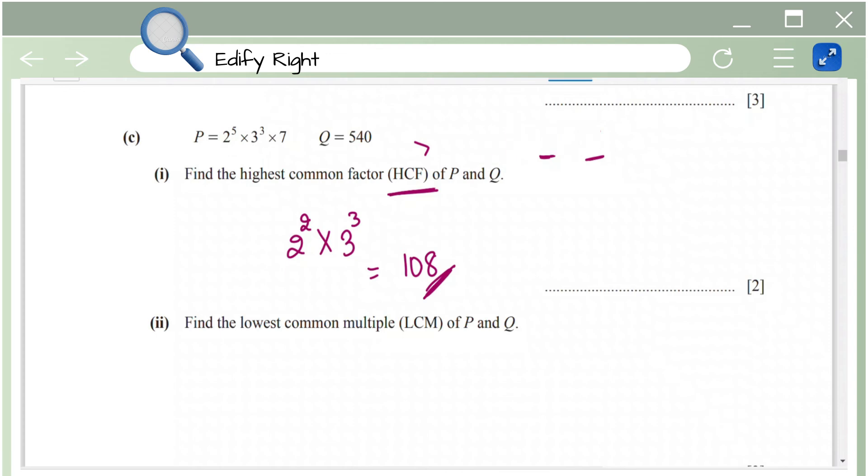Next we have find the lowest common multiple which is LCM of p and q. So this is basically you're going to write the factors of q again which is 2 power 2 into 3 power 3 into 5. So when you're finding the LCM it's just the opposite. You take the common factors and take the highest possible power and multiply even if the factors are not common.